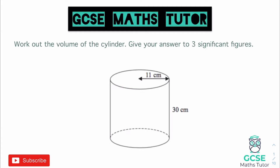The question says: work out the volume of the cylinder and give your answer to three significant figures. As I mentioned, we're going to use the same principle as before — we're going to look at the cross-sectional area, which in this case is the circle sitting on top. To work out the area of a circle, we need the formula: area equals pi r squared, where r is the radius.